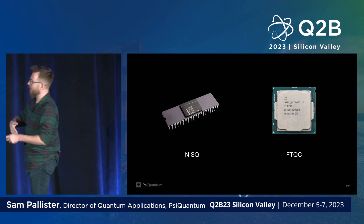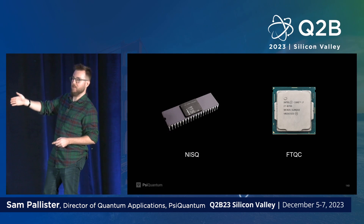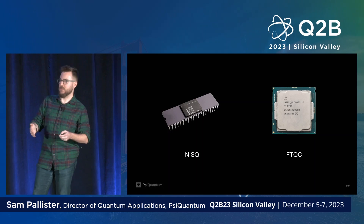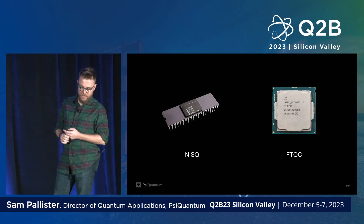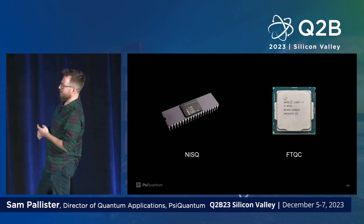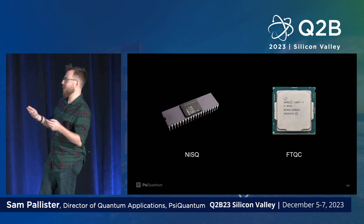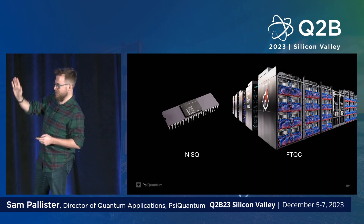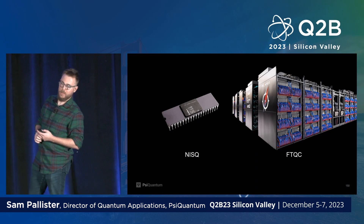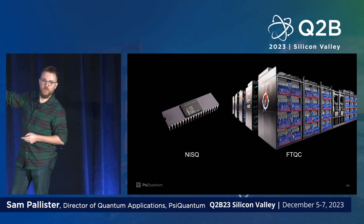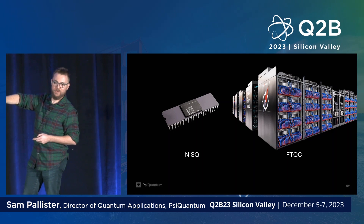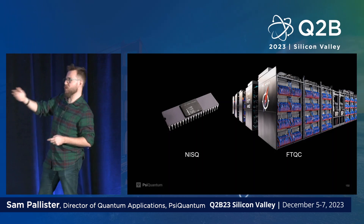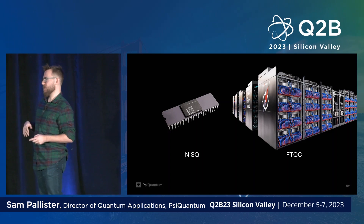We are still in a world where 95% of quantum application developers are building NISQ algorithms. There's often a misapprehension that a fault-tolerant quantum computer is just a larger or more capable version of a NISQ device — much like an old Intel microprocessor being a slower version of its modern counterpart. But that's not the right comparison. The comparison you should make is an old Intel microprocessor versus a high-performance supercomputer. No one would contend the supercomputer is just a larger microprocessor — the difference in scale necessitates new infrastructure, new architectures, and entirely new ways of designing applications.